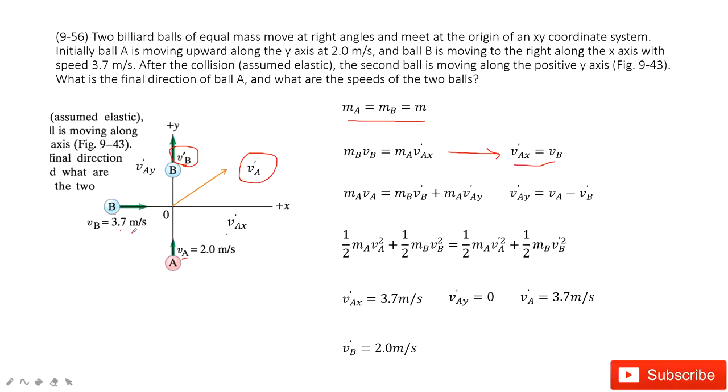Now we look at the y direction. Initially it has MA VA pointing to positive y direction. Finally we have MB VB plus, and we also project VA plus in the y component, so we have VAy plus. The mass is equal, so this equation can be simplified.